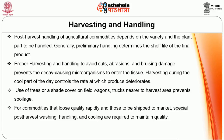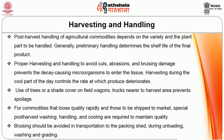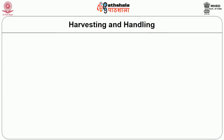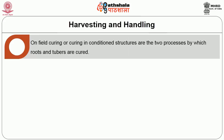For commodities that lose quality rapidly and those to be shipped to the market, special post-harvest washing, handling and cooling are required to maintain quality. Bruising should be avoided in transportation to the packing shed during unloading, washing and grading. Curing is an important step for shelf life extension of roots and tubers. Generally, roots and tubers are bruised during harvesting, and this curing process heals the cuts since in curing these are stored at high temperatures and high relative humidity. Curing also induces the formation of a new protective layer of cells. On-field curing or curing in conditioned structures are the two processes by which roots and tubers are cured.